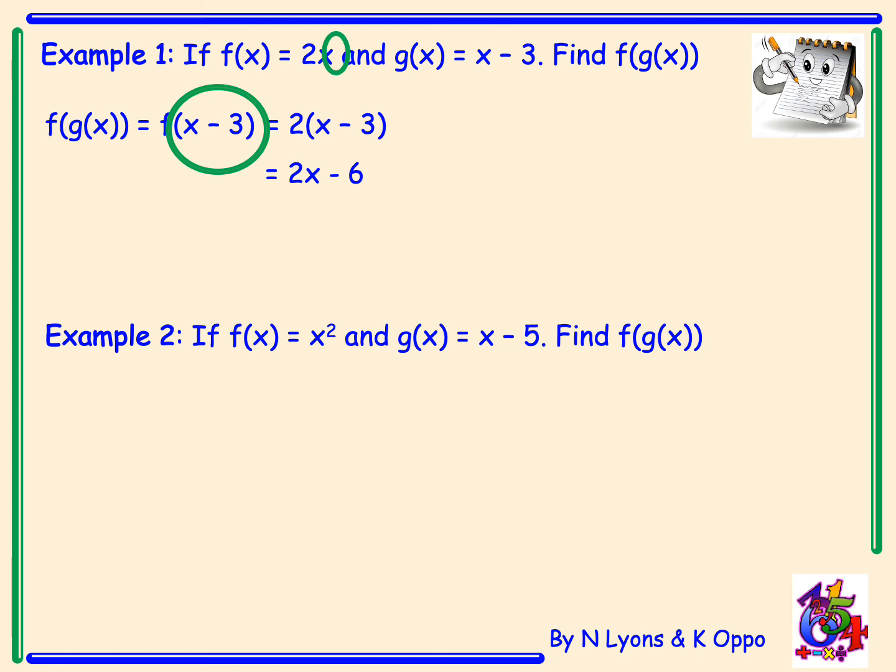If we look at example 2, we have f of x this time is x squared and g of x is x minus 5. And again, we have to find f of g of x. First step, we must state what we're putting into the f function. So into the f function, we need to put g, which is x minus 5. So this line is very important.